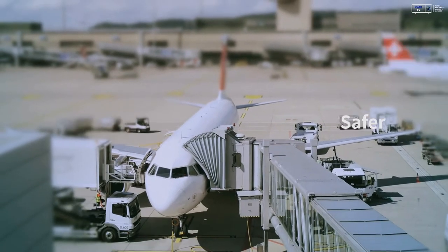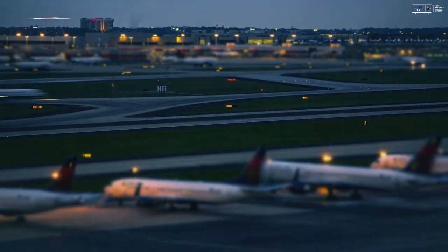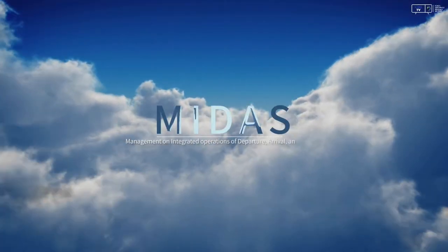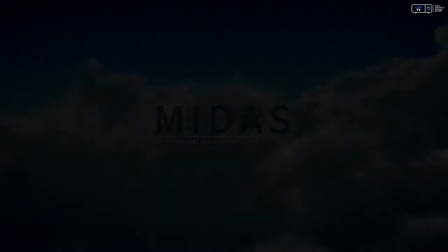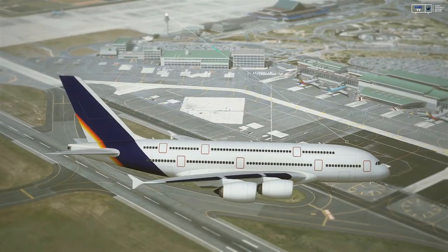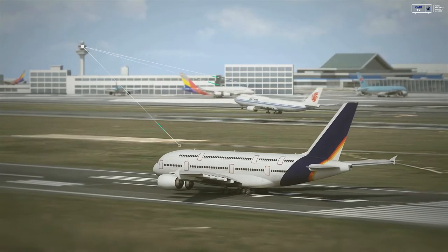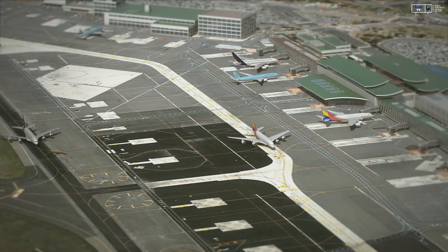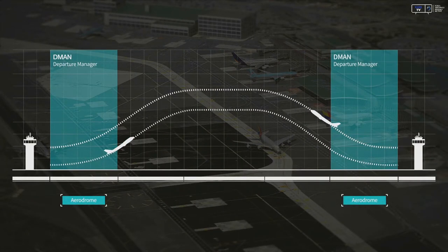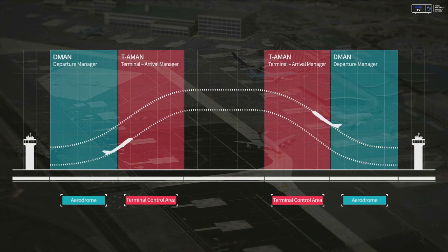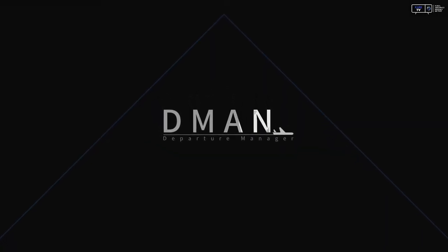Faster, safer, and more efficient, MIDAS is a next-generation aircraft departure and arrival management system that creates the future value of the sky. MIDAS facilitates delay-free departures and arrivals on the ground and in the airspace around an airport by calculating delays and dispersing them into aircraft flying or waiting for takeoff. It is composed of D-man, which manages departure traffic and aircraft ground movement, and TA-man, which manages arrival traffic flow in the terminal area. Operating D-man and TA-man in combination ensures efficient aircraft departures and arrivals.